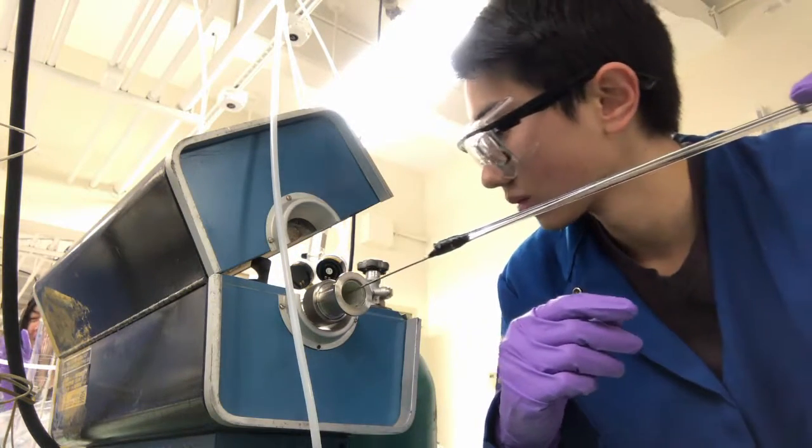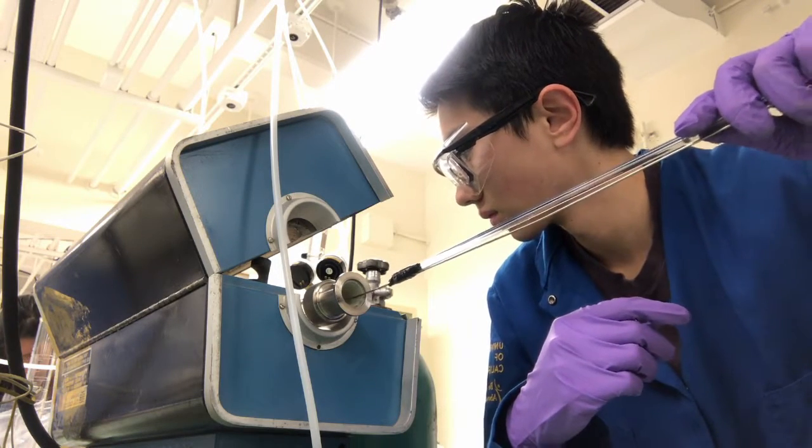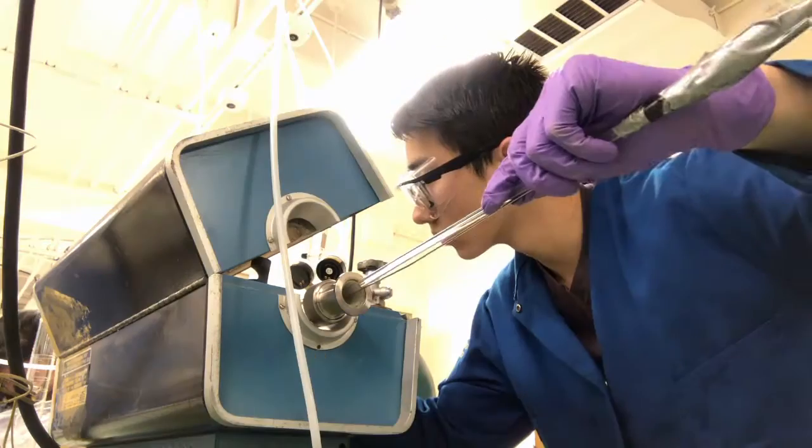To start the growth, I will twist the clamp back on, set my desired gas flow rate and set the growth parameters on the control system.